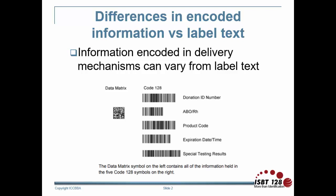It is necessary to make a distinction between the information that is encoded in the delivery mechanism versus what is printed on a label as text. There are various reasons to display different text.